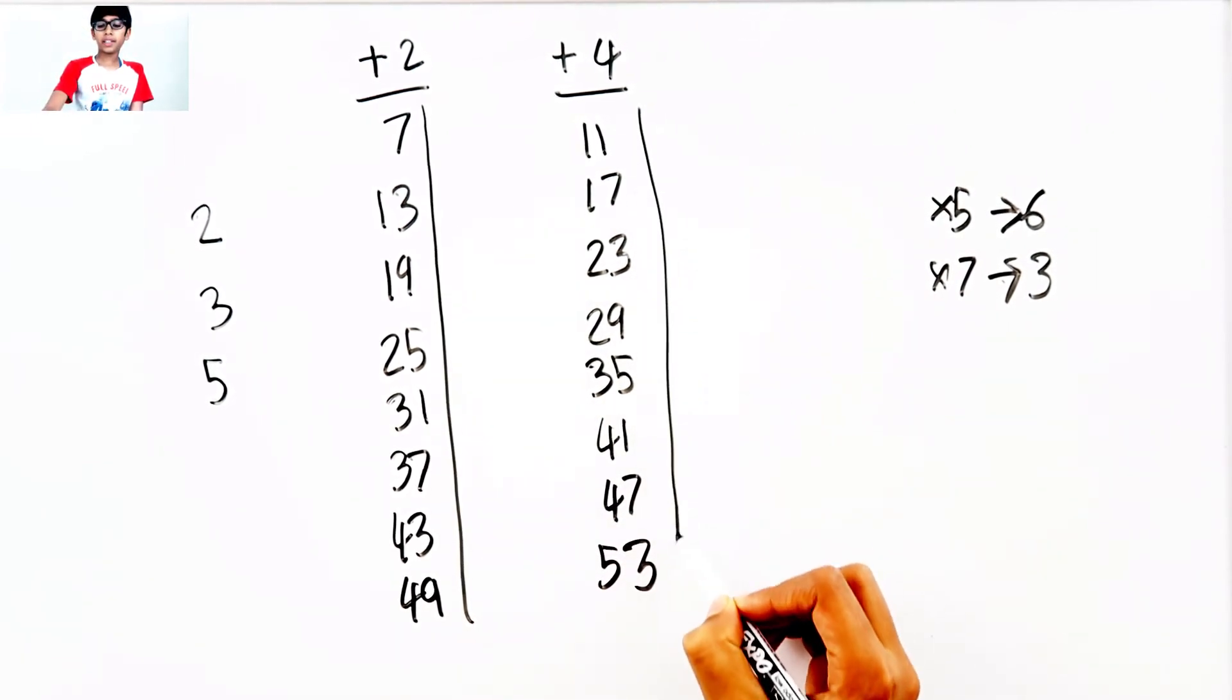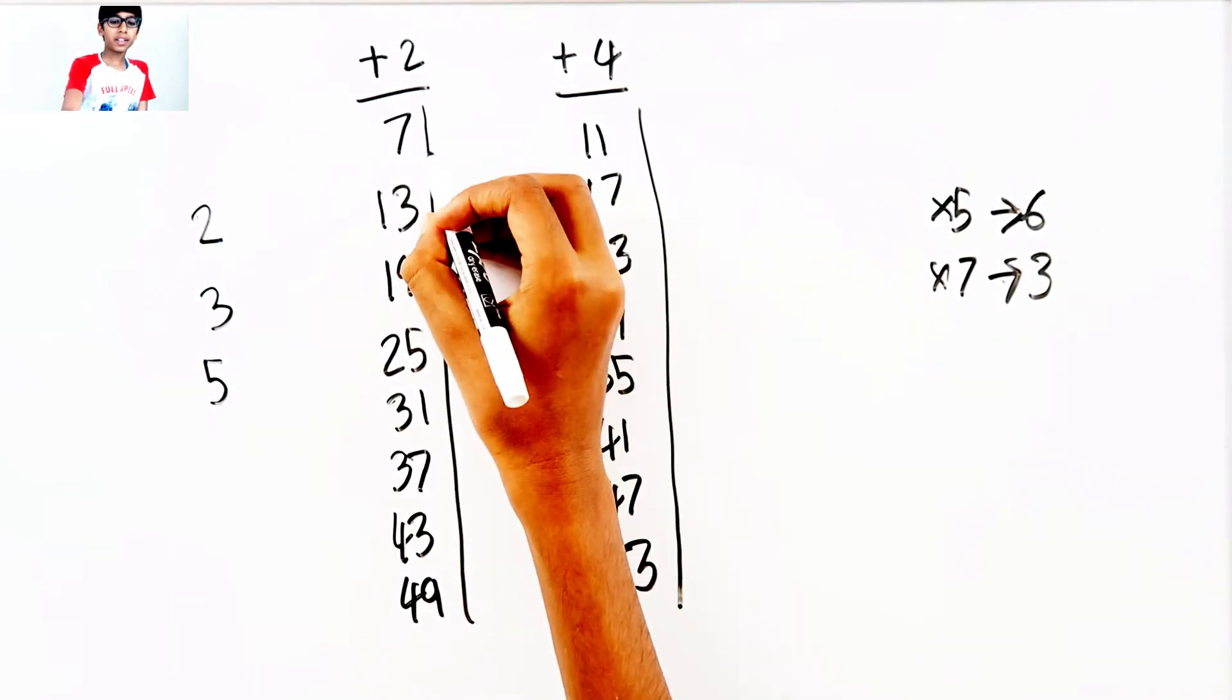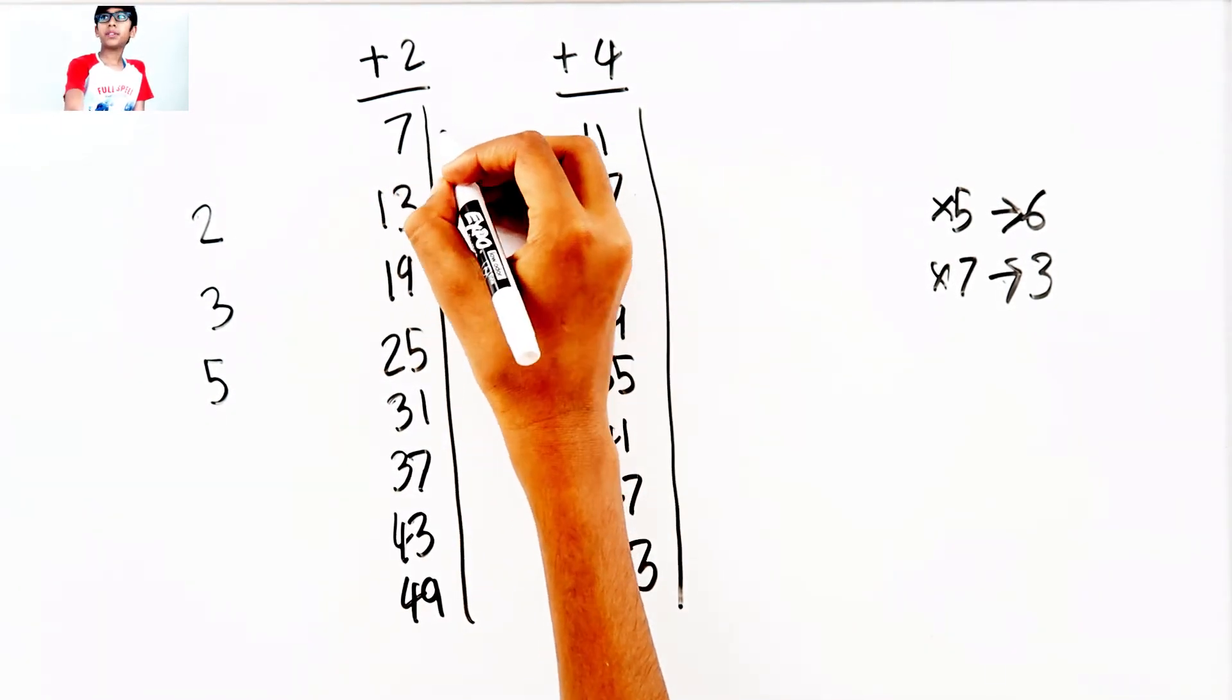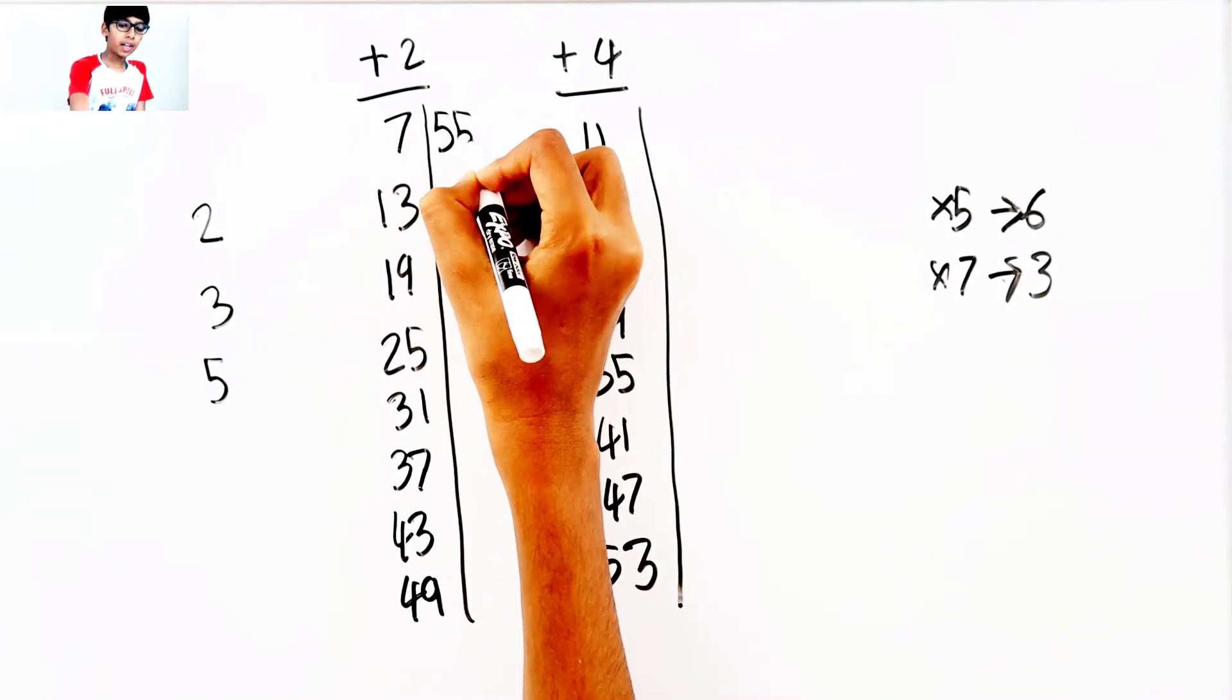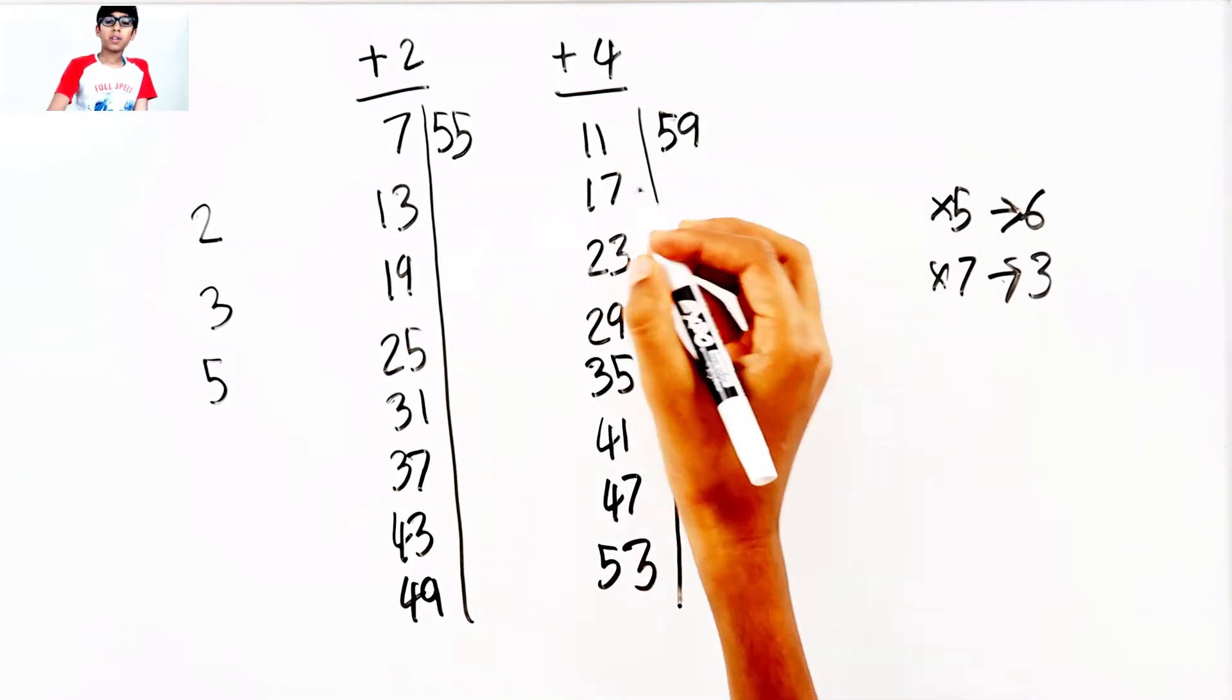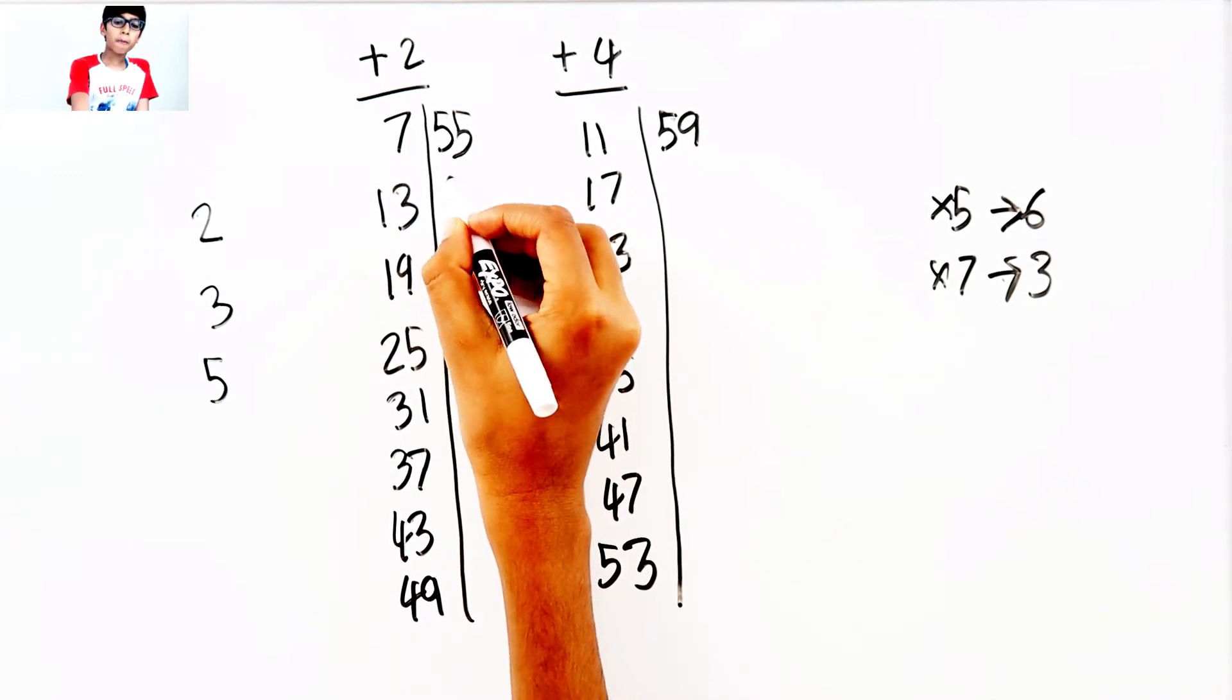53 plus 2 is 55, 55 plus 2 is 59, plus 2, 61, plus 4, 65, plus 2, 67, plus 4, 71, plus 2, 73, plus 4, 77, plus 2, 79, plus 4.